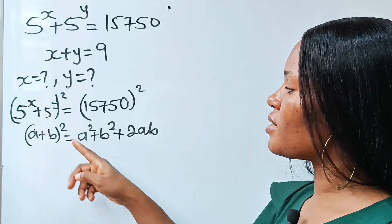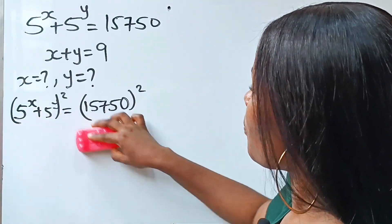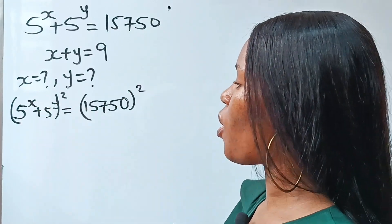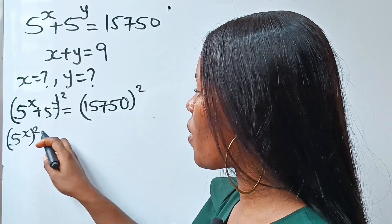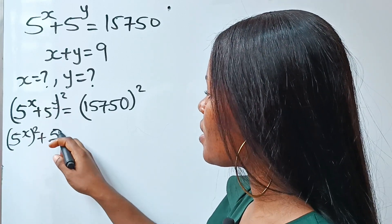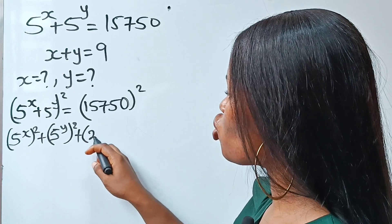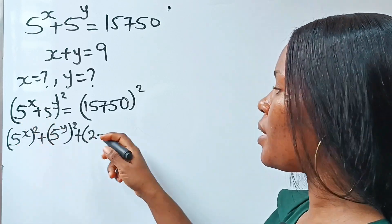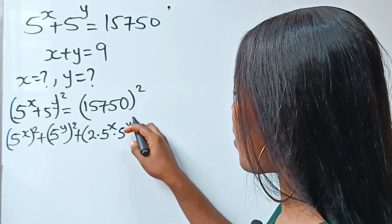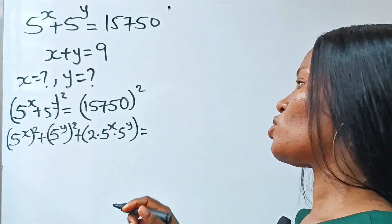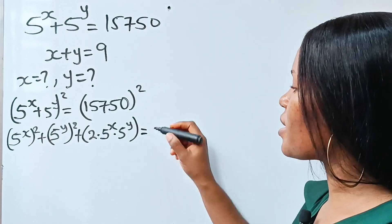That means if we relate this to what we have, we are going to have 5^x to the power of 2 — that is our a squared — plus 5^y squared, plus 2 multiplied by a and b, that is 5 to the power of x multiplied by 5 to the power of y, is equal to 15750.